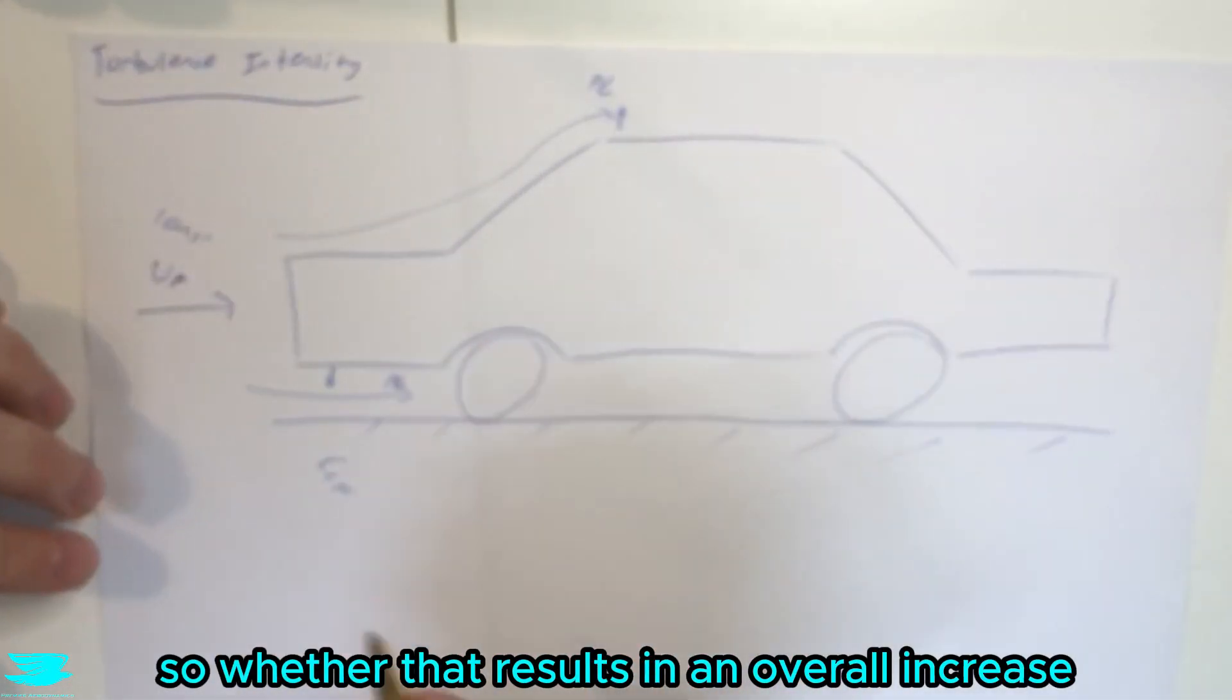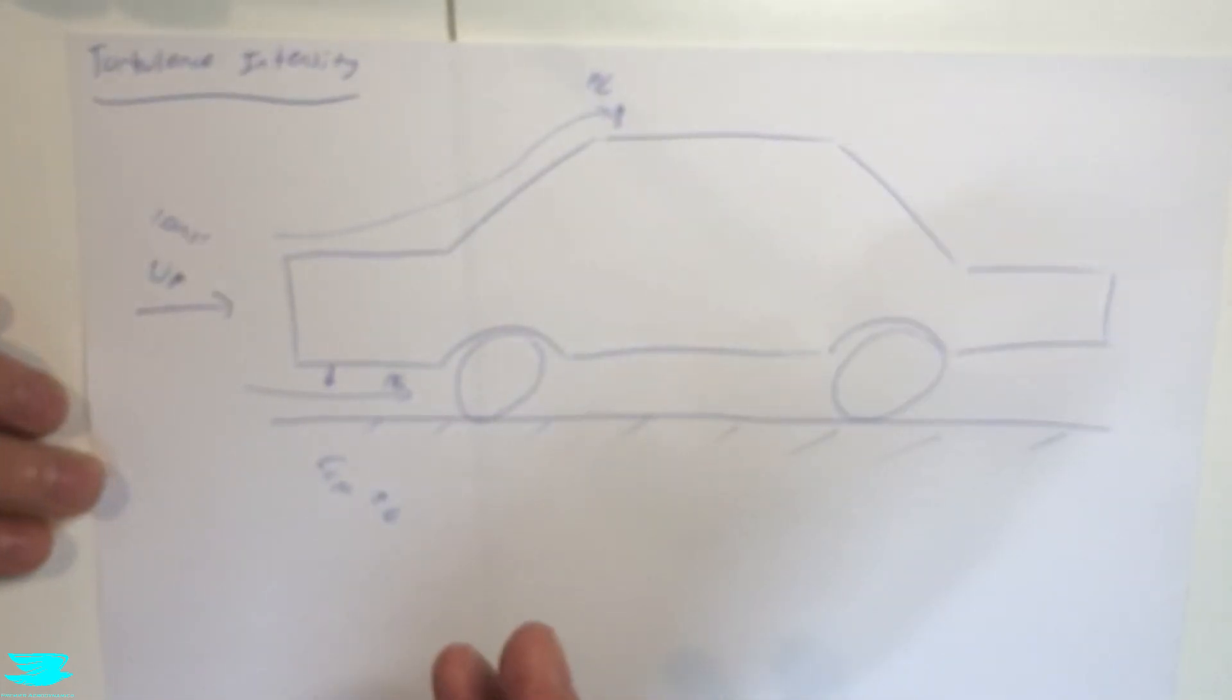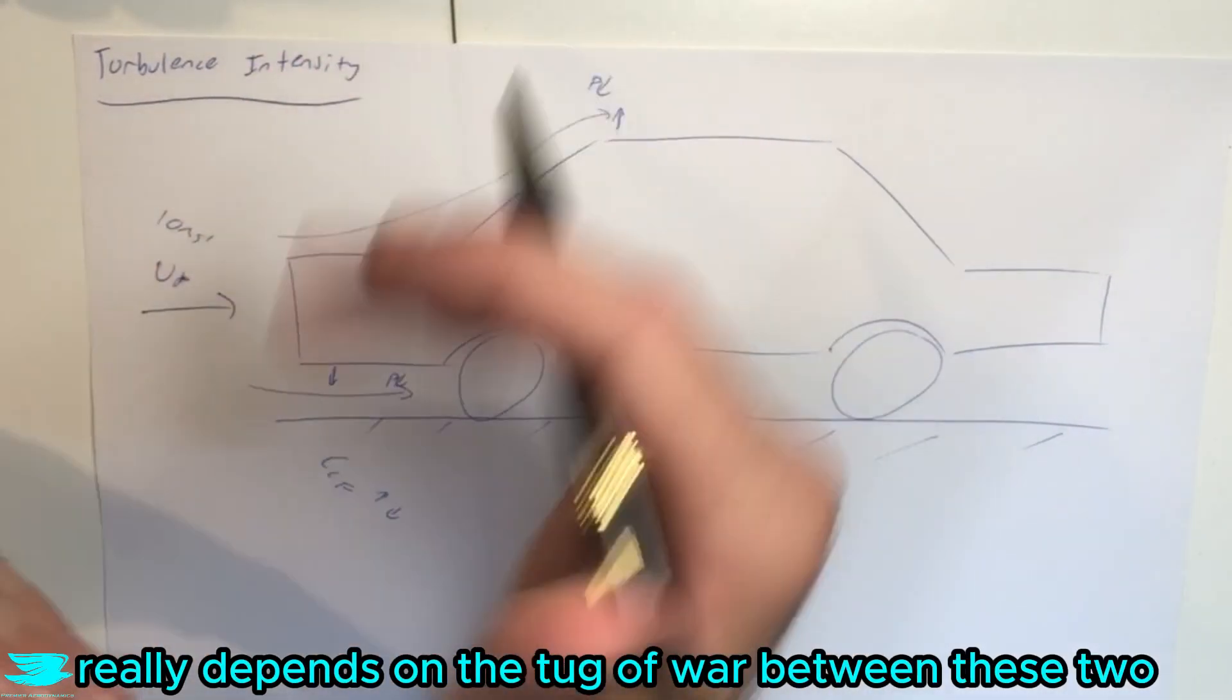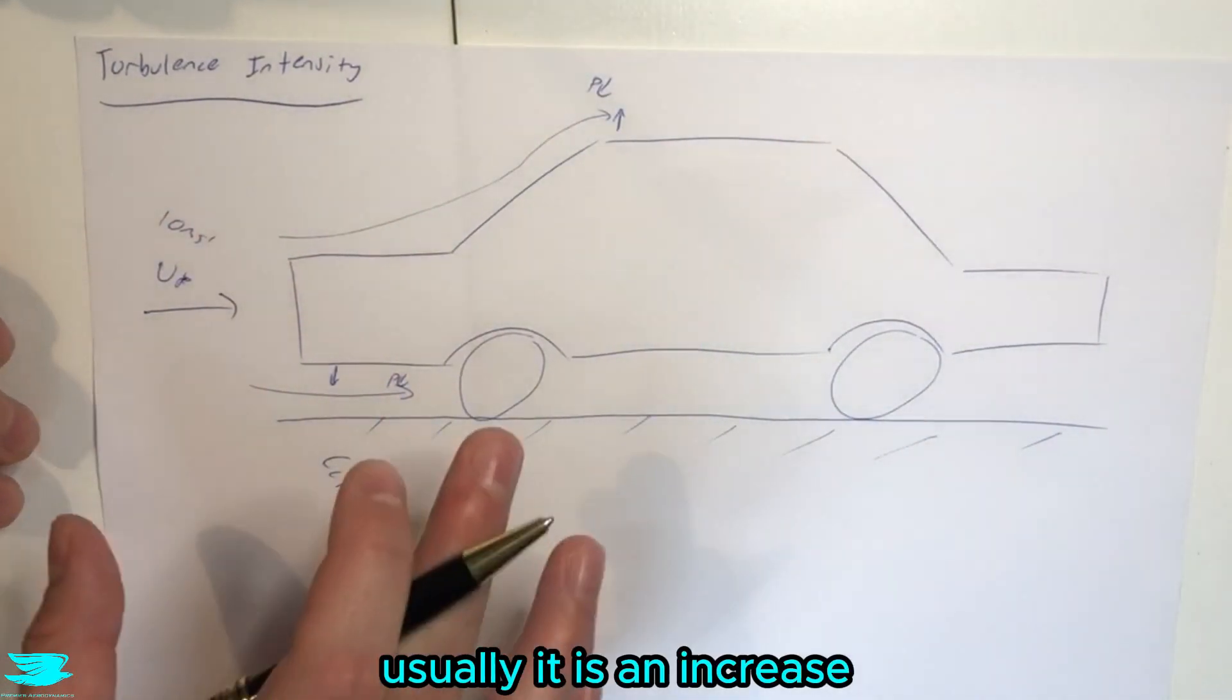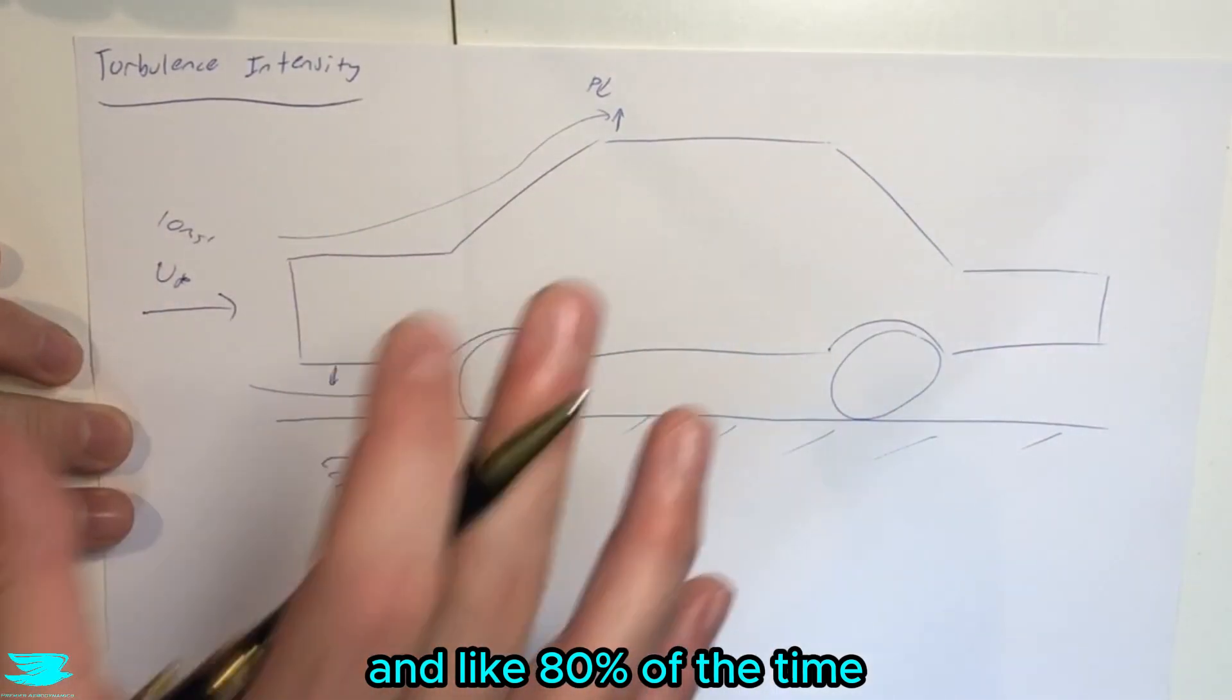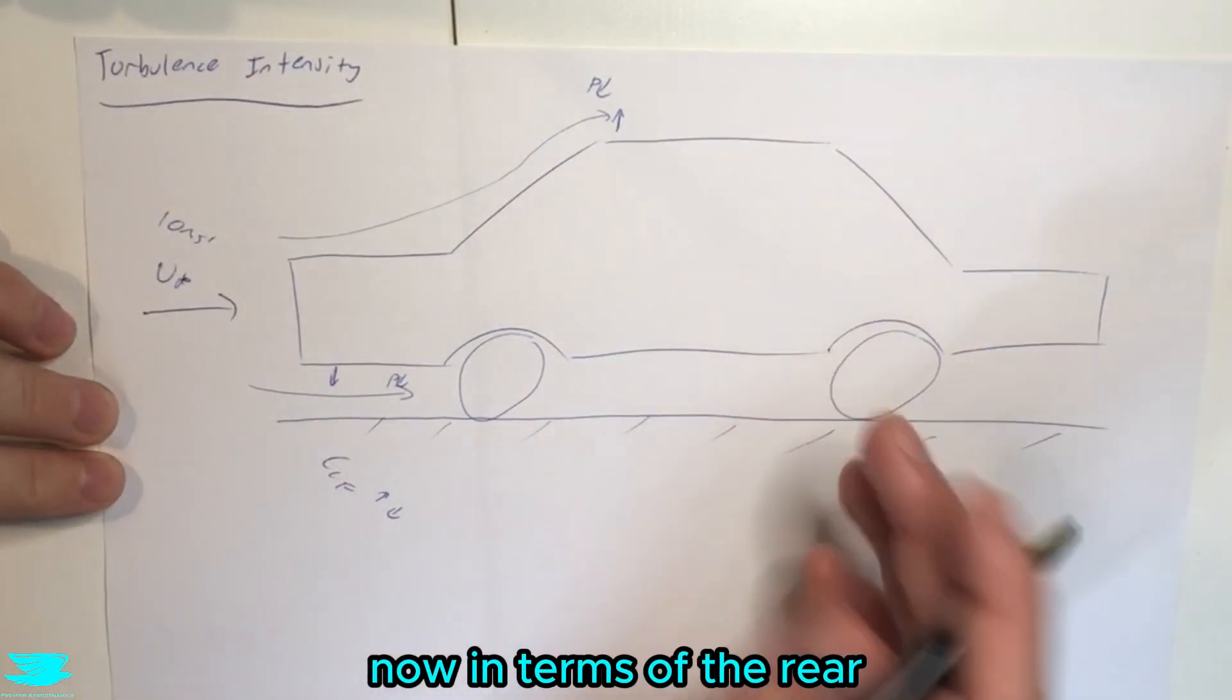So whether that results in an overall increase for the lift coefficient in the front or a drop really depends on the tug of war between these two regions here. Usually it is an increase and like 80% of the time, the lift coefficient will increase at the front here and that's usually by about 5 to 10%. Now in terms of the rear,